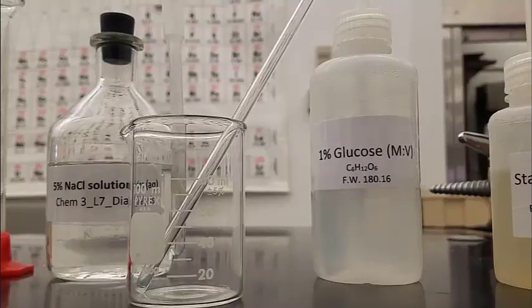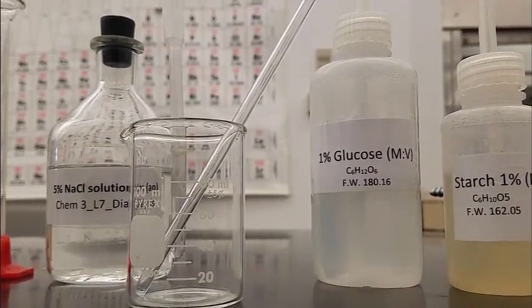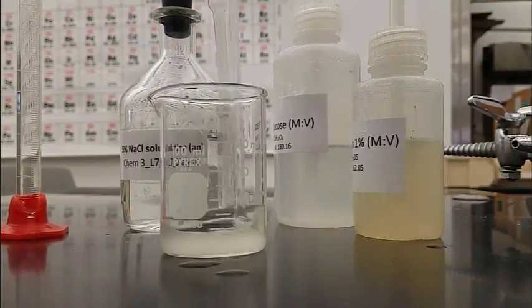We've skipped part A and are jumping to part B. Get your salt, glucose, and starch solutions, five milliliters of each, put them into a beaker, and stir it up.